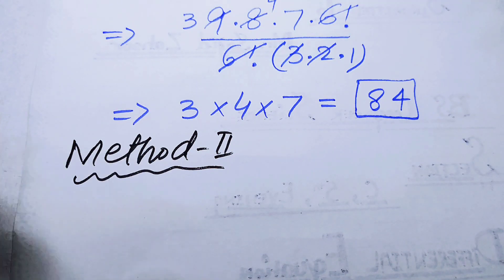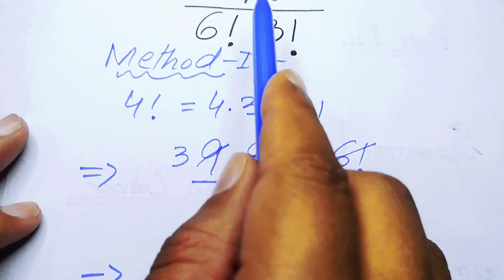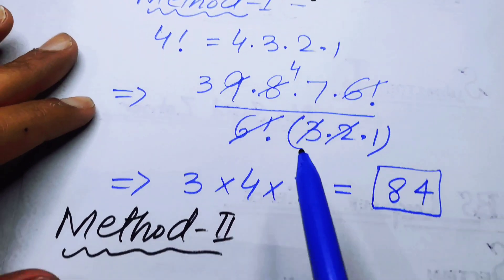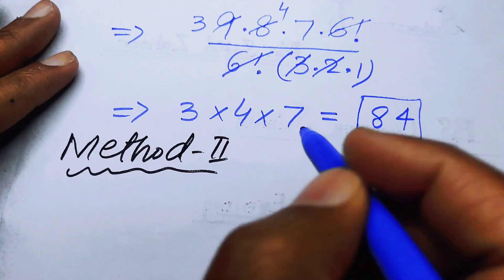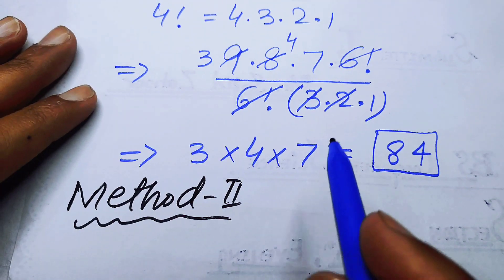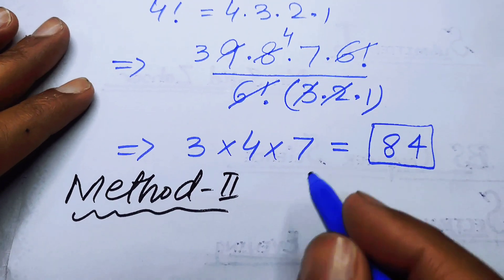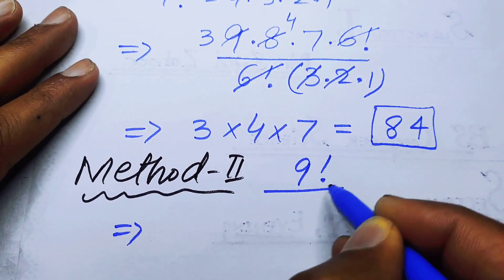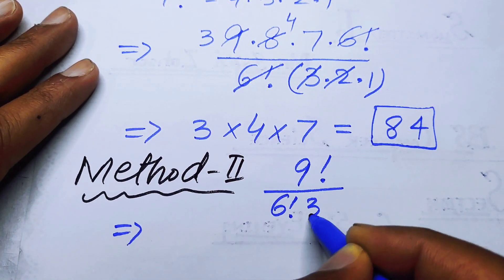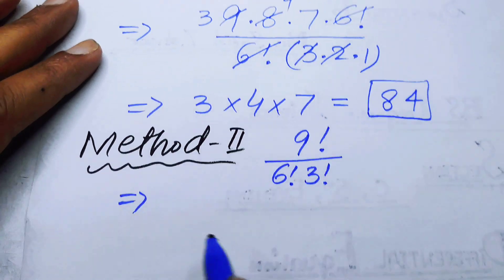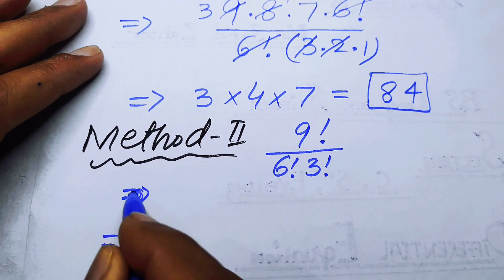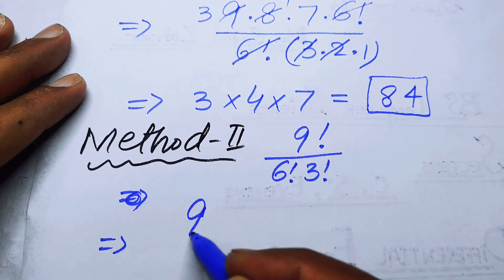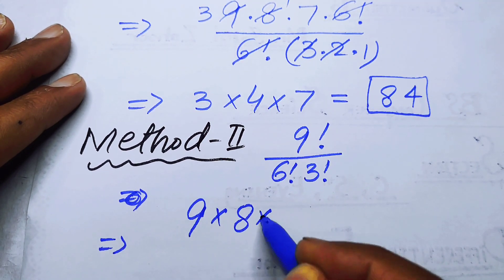Now we move to Method 2. Here, instead of partially opening nine factorial, we expand all terms fully. In the numerator we have nine factorial over six factorial times three factorial, and we fully expand nine factorial as nine multiplied by eight multiplied by seven...